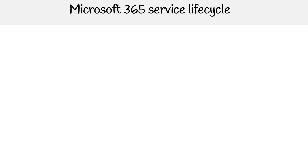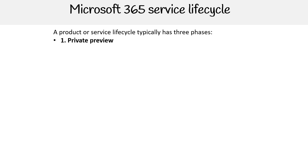Hey, this is Andrew Brown from ExamPro, and we're taking a look at the Microsoft 365 service lifecycle. Typically, a product or service lifecycle has three phases. The first phase is private preview, then the second phase is public preview, and the third phase is general availability, abbreviated as GA.